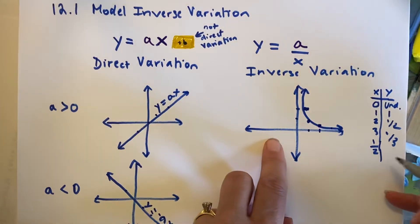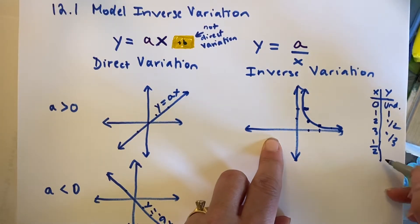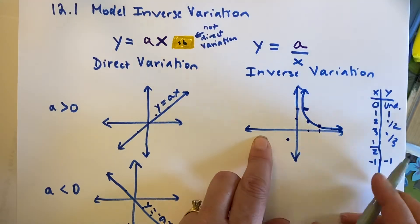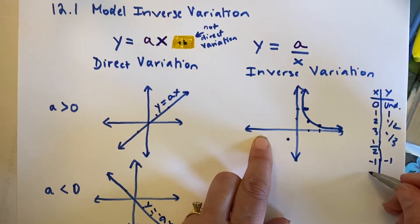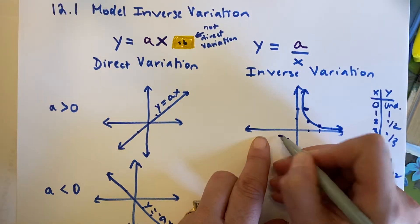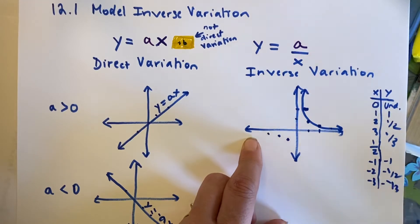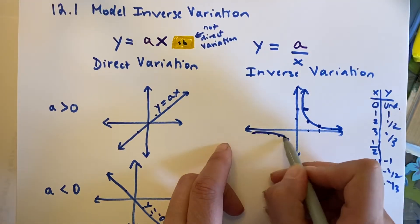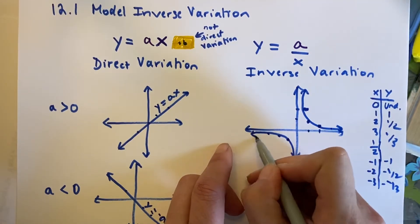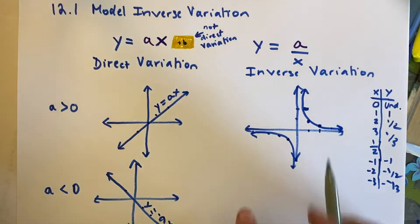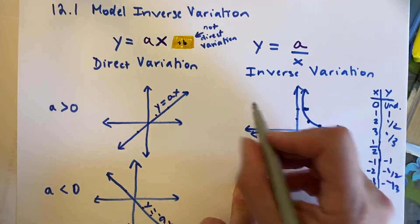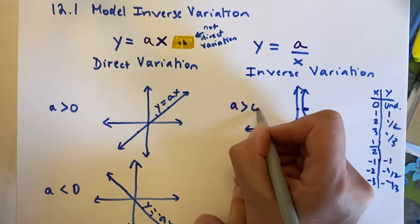What if I have negative numbers? Well, if I have negative 1, I get negative 1. If I get negative 2, I get negative 1 half, negative 3, negative 1 third. And what we're going to find is you end up with literally two curves opposite each other, going this direction. This is, again, if a is greater than 0.